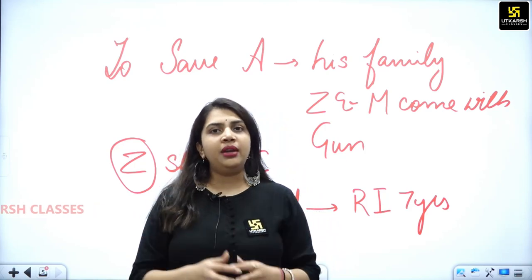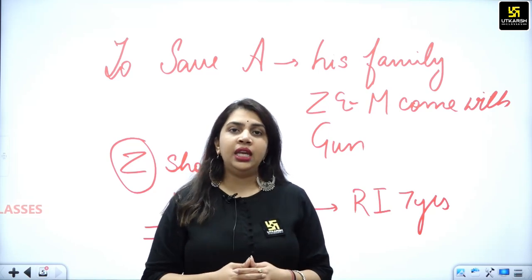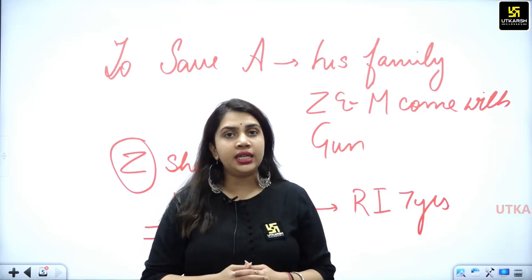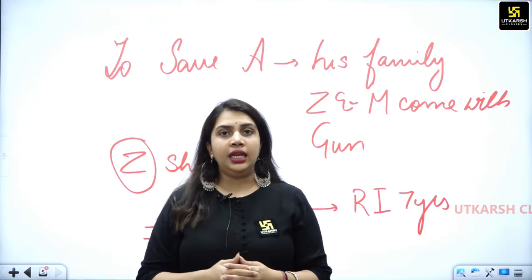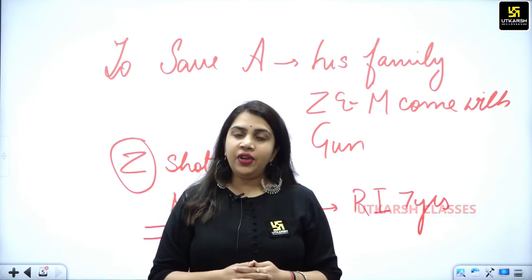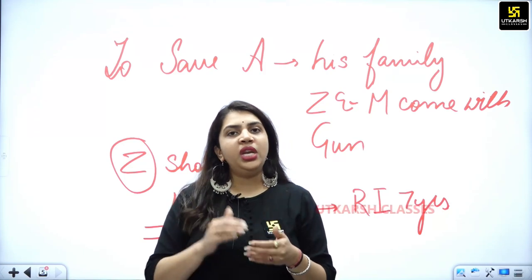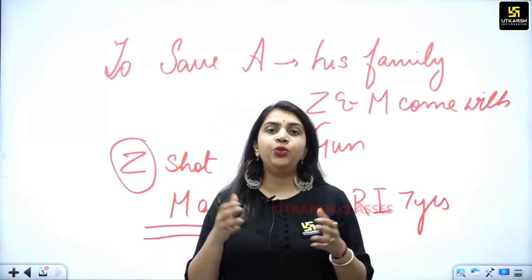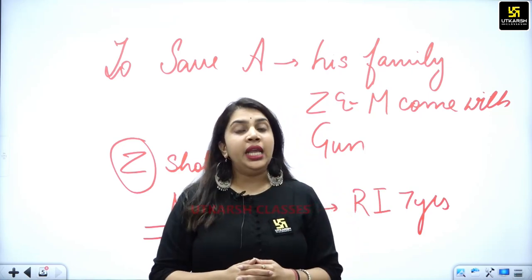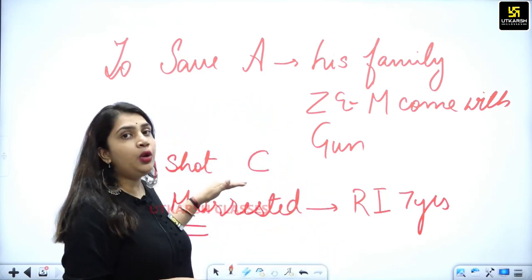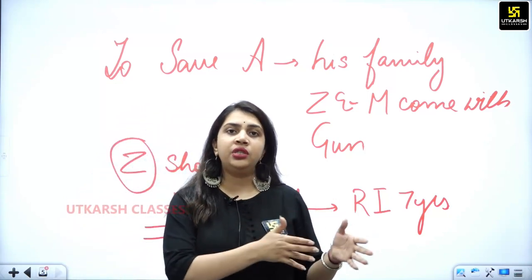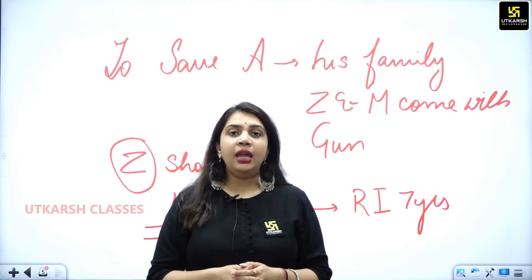When the matter reached the Privy Council, Mahbub Shah pleaded that his common intention was not to commit any crime together. The Privy Council agreed that there was an absence of common intention here. Common intention under Section 34 requires that both parties act together toward a crime, but here Z alone took the step of shooting the gun, and M person never fired.